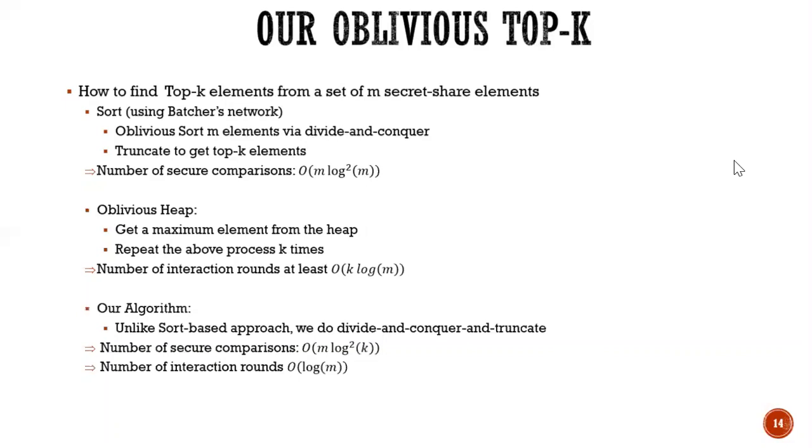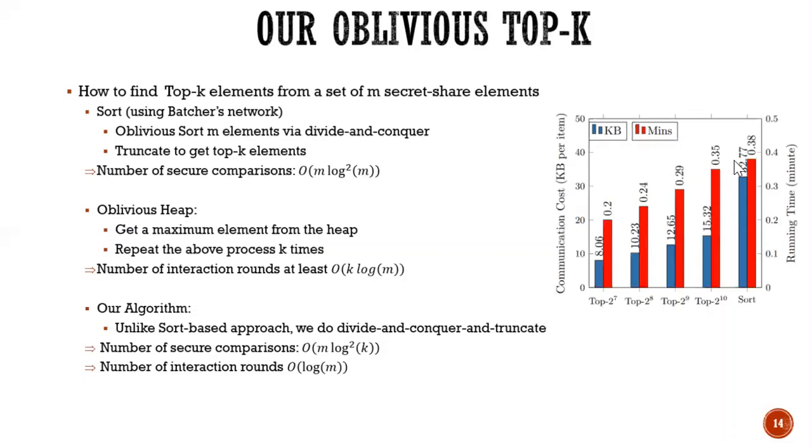So we propose a simple oblivious top K protocol. So unlike a sort-based approach, we do divide, sort, and truncate at the same time. So therefore, our scheme requires a number of secure comparisons M log K squared. And the number of interaction rounds is still log M. So we compare our work with sort, and you see here we show around 2 to 4 times improvements.